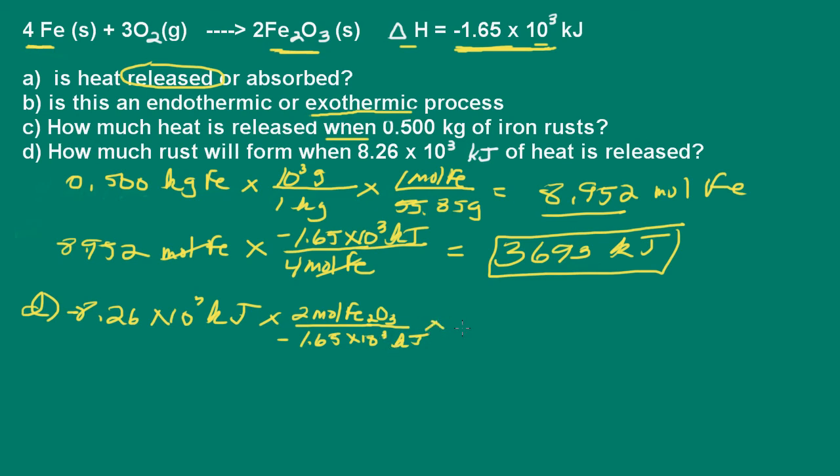So now all we have to do is convert the moles of iron 3 oxide to grams. So 1 mole of iron 3 oxide is going to have a mass of 159.7 grams. So let's go ahead and calculate this.